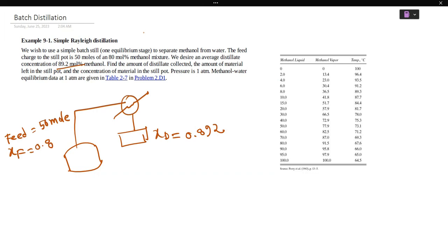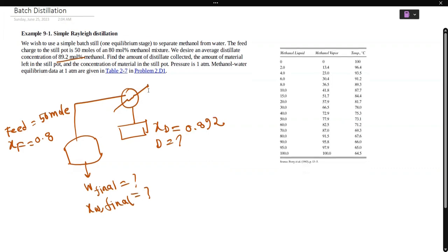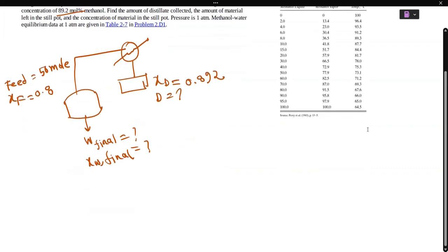We need to calculate the amount of distillate and w final. So xw final, I'm using the area equation. Let us change the problem. In this video, we discussed last time we have x on the other side.